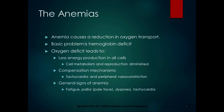Anemia causes a reduction in oxygen transport, and it's usually due to a hemoglobin deficit — a decrease in hemoglobin content. If you have low hemoglobin, you have oxygen deficit, and oxygen deficit leads to less energy production in all cells. Cellular metabolism and cellular reproduction is diminished. Compensation mechanisms to improve oxygen supply include tachycardia, increased heart rate, and peripheral vasoconstriction to keep blood in the important areas of the body. These compensation mechanisms lead to the general signs of anemia: fatigue, excessive tiredness, pallor, dyspnea — difficulty breathing — and tachycardia.